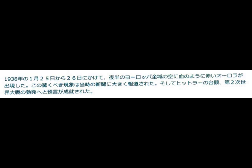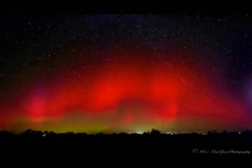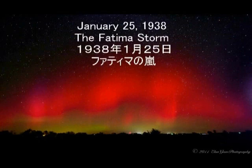そして前年の1938年1月25日から26日にかけて、夜半のヨーロッパ全域の空に血のように赤いオーロラが出現しました。この驚くべき現象は当時の新聞にも大きく報道されました。そしてヒトラーの台頭、第二次世界大戦の勃発へとつながり、ファティマの第二の予言が成就されたということになります。